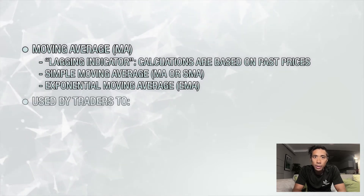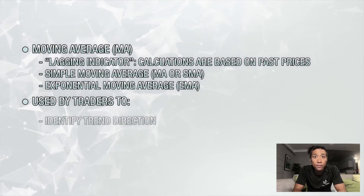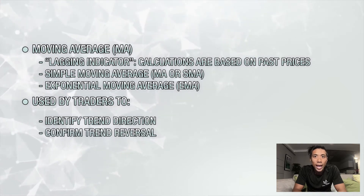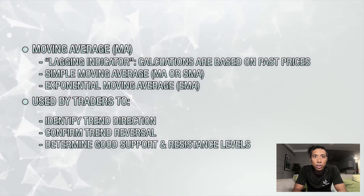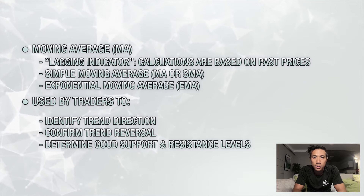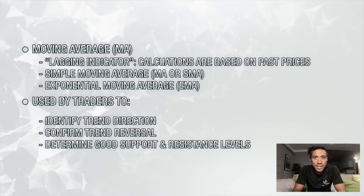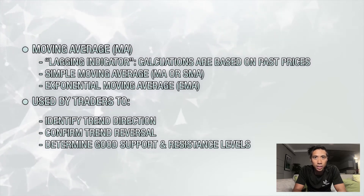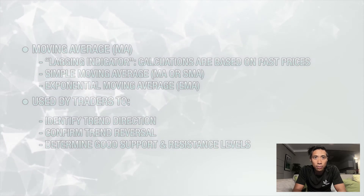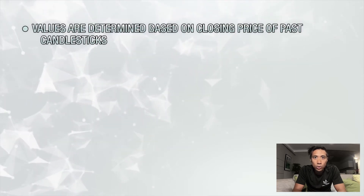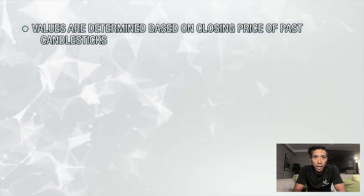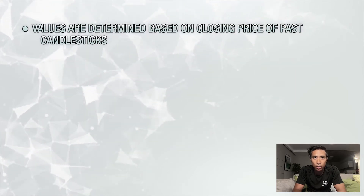Both types are used by traders to identify a trend direction, confirm a trend reversal, and also determine good support and resistance levels. Even though they're calculated with drastically different formulas, which you can find details about by searching online, their values are determined based on the closing price of past candlesticks.